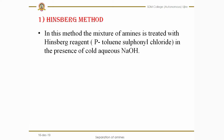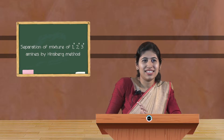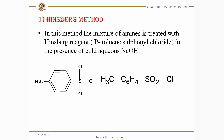In this method, a reagent commonly called the Hinsberg reagent is used — that is para-toluenesulfonyl chloride. You can see this on the slide. The chemical formula is C6H4(CH3)SO2Cl, which is a tolyl group attached to SO2Cl.